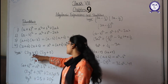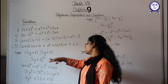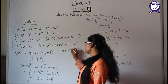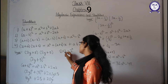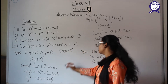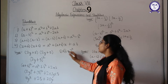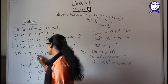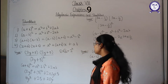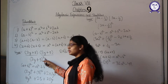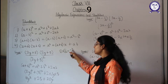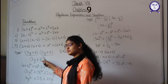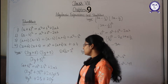The first question is (2y+5) multiplied by (2y+5). Since the same value 2y+5 is repeating itself in multiplication two times, we can write it as (2y+5) whole square.